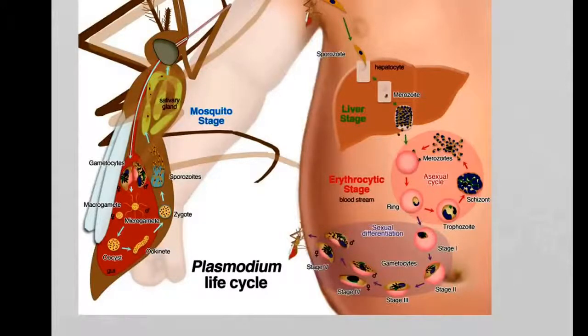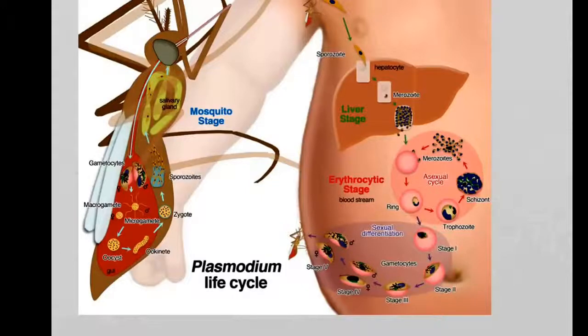Then some of these parasites will undergo another process and they will differentiate into male and female parasites. Now they are sitting there—they can't do anything in the blood cells. They can't fuse together in the blood cell because for that they need the conditions which are only available in a mosquito gut.